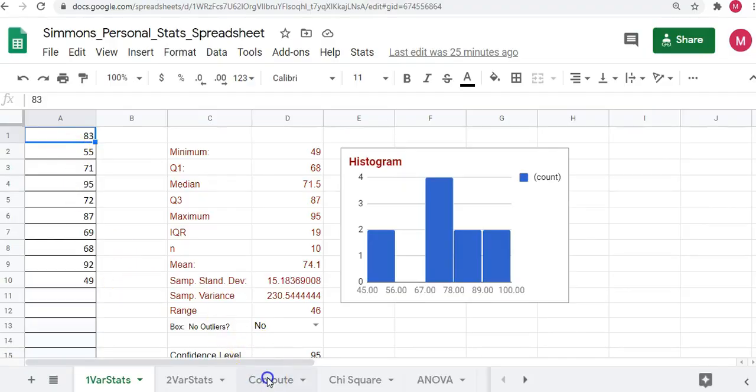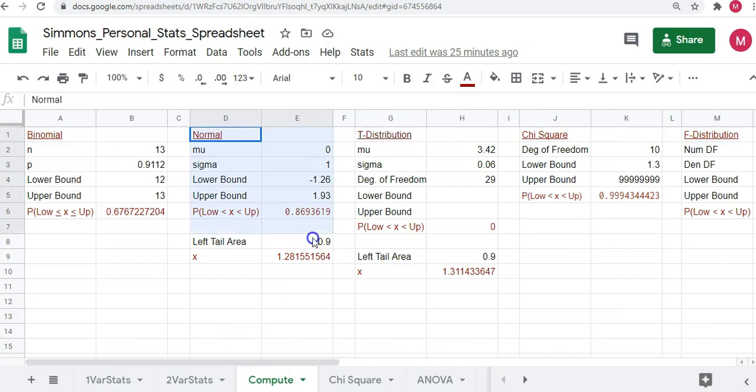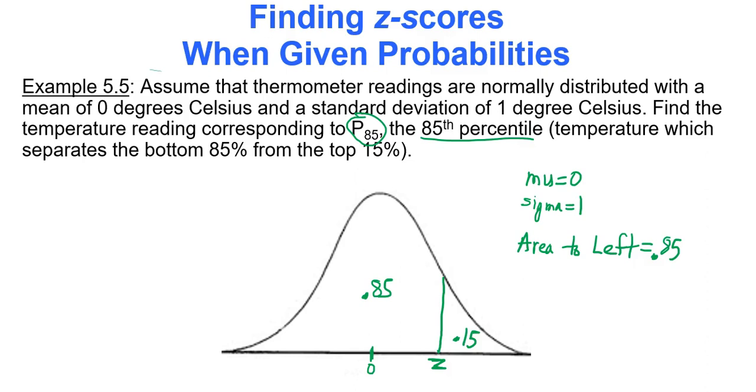So in Google Sheets, we'll go to our Compute tab, and we're focused on the normal region. So mu is 0 and sigma is 1. You don't care about anything else except the left-tail area. When you're trying to find data values, you use left-tail area. It's 0.85. So the corresponding data value, we'll do two decimal places for data values, is 1.04. So my data value is 1.04.